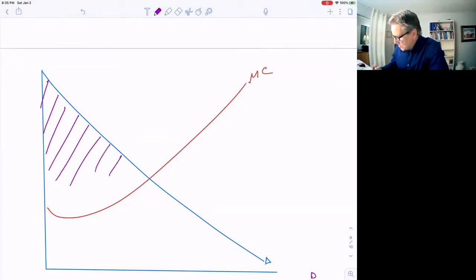In fact, they can even capture all the surplus that would be deadweight loss too because they can keep charging a lower and lower price all the way down to where the price is greater than their marginal cost.